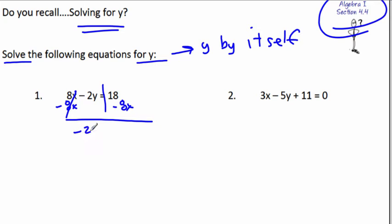So we get rid of that x term. And we're left with negative 2y equals. Now these are not like terms, so you cannot add them together. You can't combine them. So we're just going to write it out as negative 8x plus 18. And I like to write the x term first so it's in slope-intercept form.